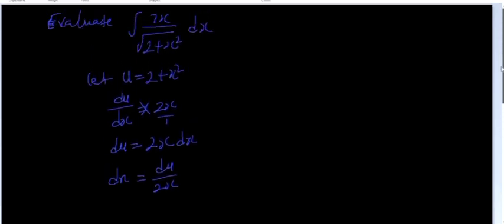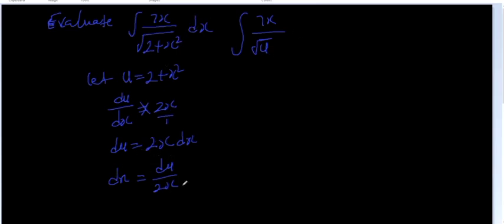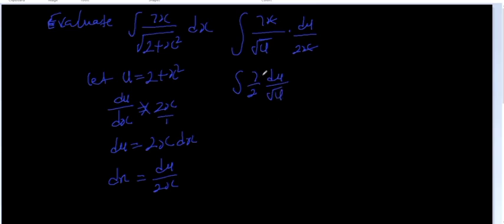From there you can now substitute. You have integral of 7x over root u, and dx is replaced by du divided by 2x. The x terms cancel, and you have integral of 7 over 2 times du divided by root u.